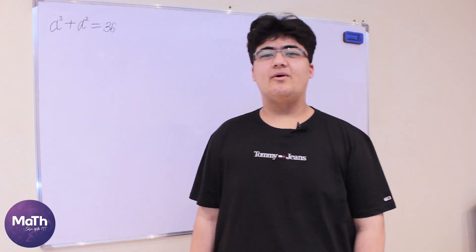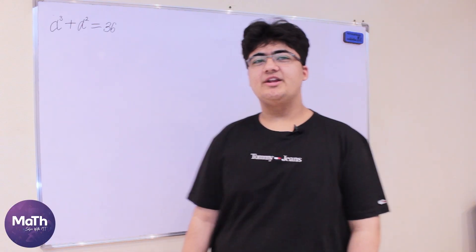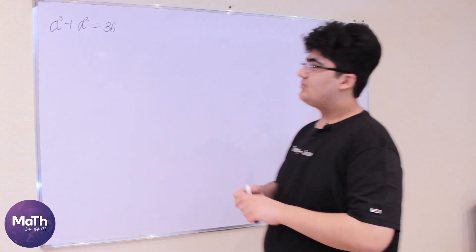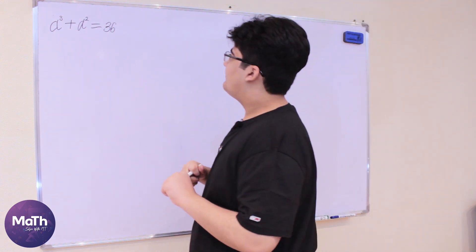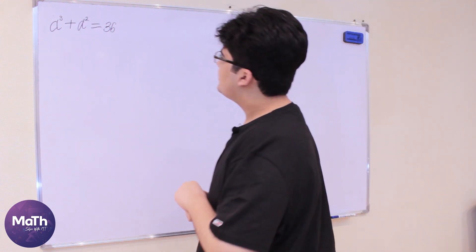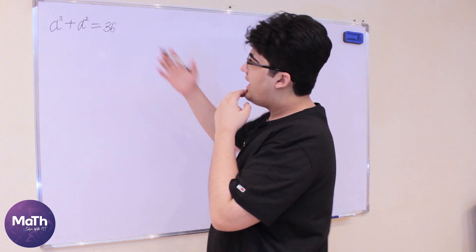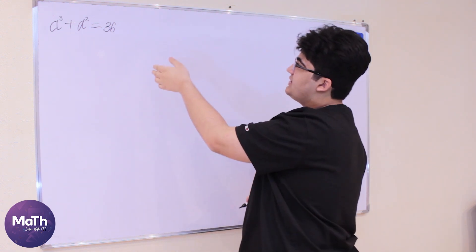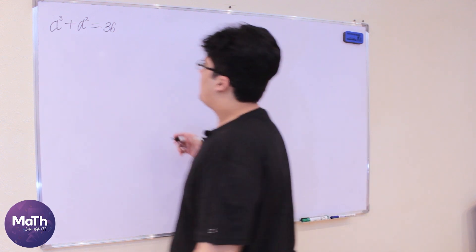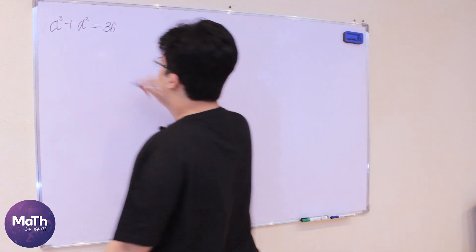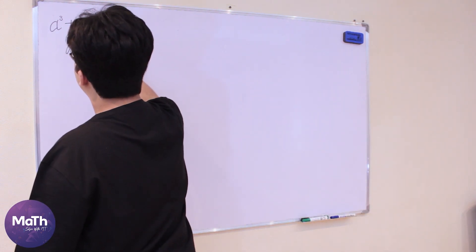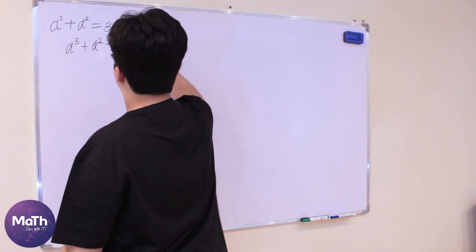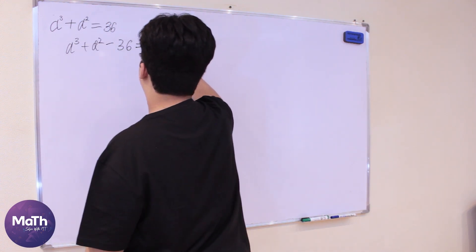Hi guys and welcome back to my channel. Today we have an algebra problem: a³ + a² = 36. So a³ + a² - 36 = 0.